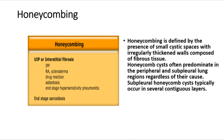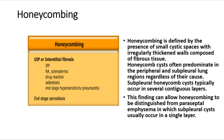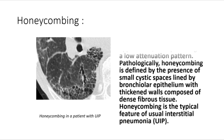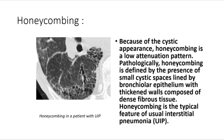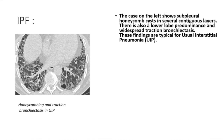Honeycombing is defined by the presence of small cystic spaces with irregularly thickened walls composed of fibrous tissue. Honeycomb cysts predominate in peripheral and subpleural lung regions and typically occur in several contiguous layers — distinguishing honeycombing from paraseptal emphysema, in which subpleural cysts usually occur in a single layer. Pathologically, honeycombing is lined by bronchiolar epithelium with thickened dense fibrous tissue walls. The case shown displays subpleural honeycomb cysts in several contiguous layers.